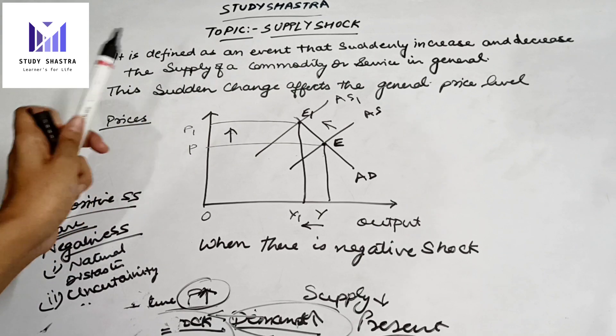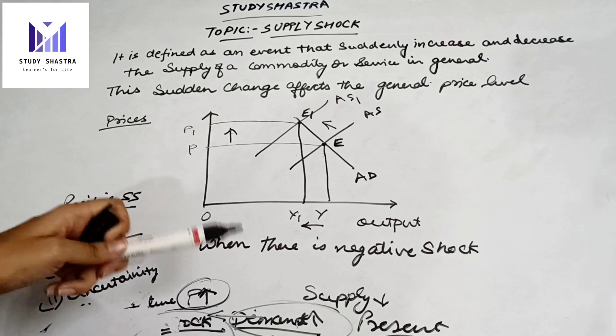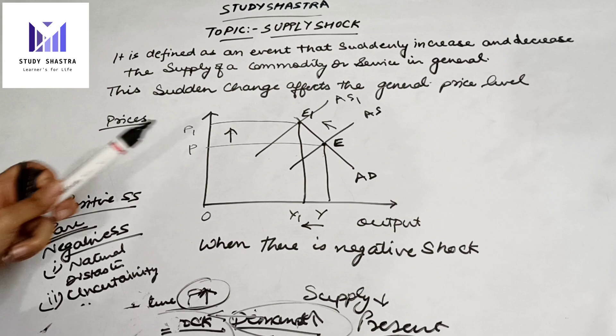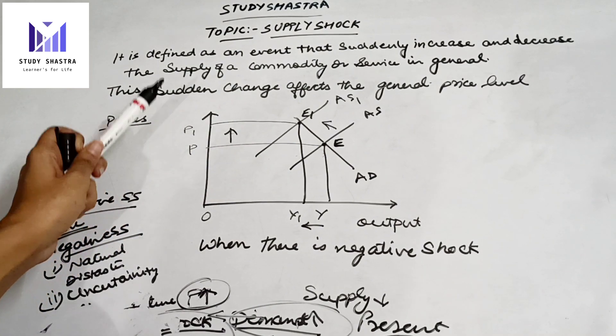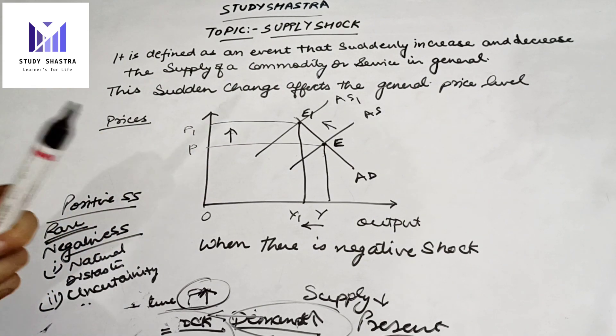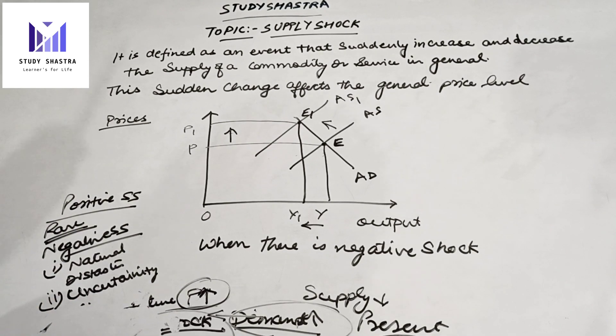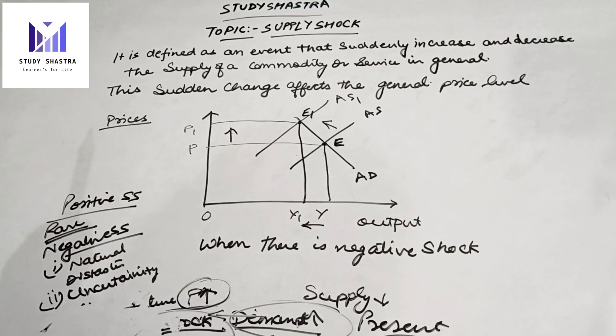We know there is a direct relation between price and supply, but what happens here is that as supply falls, prices immediately rise. This is a kind of supply shock because with the normal direct relation, this condition doesn't happen.